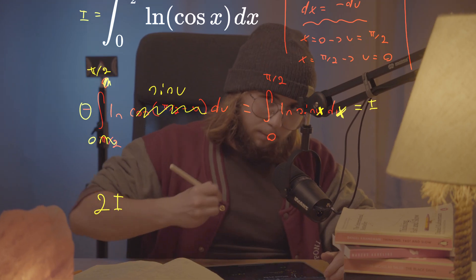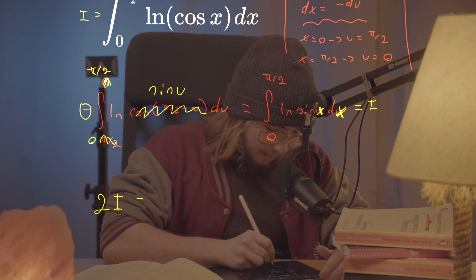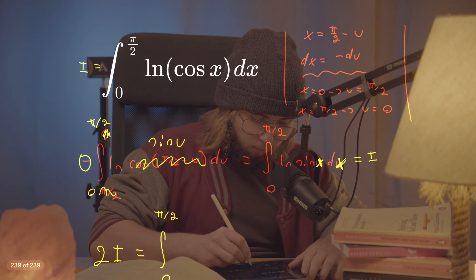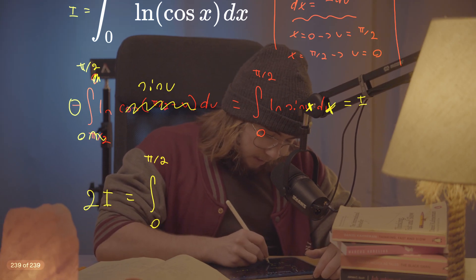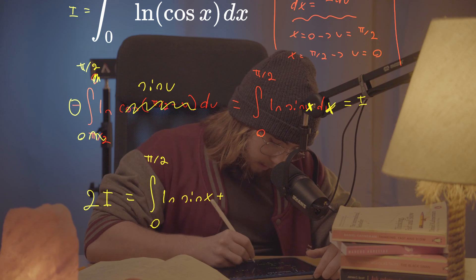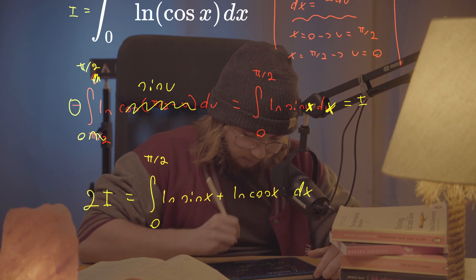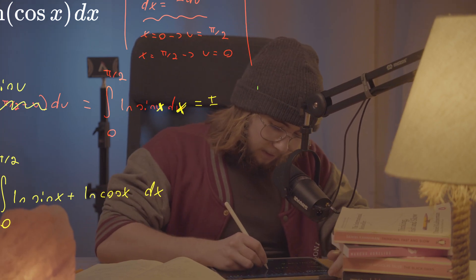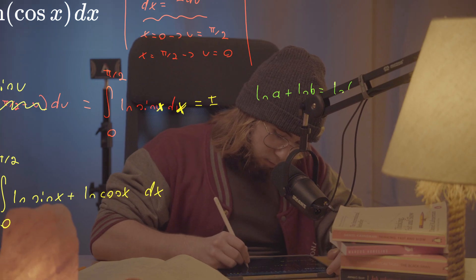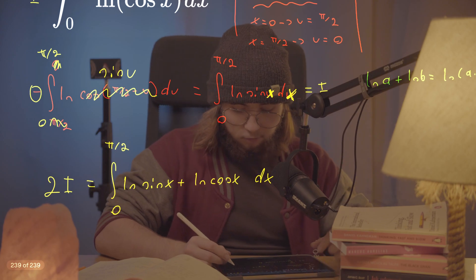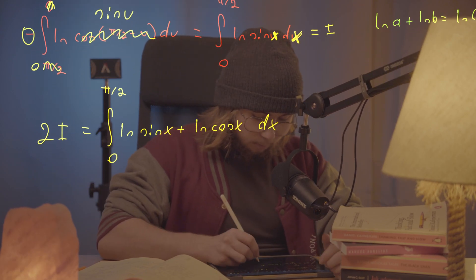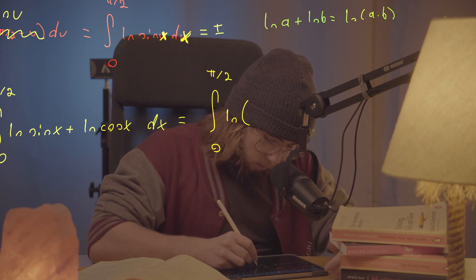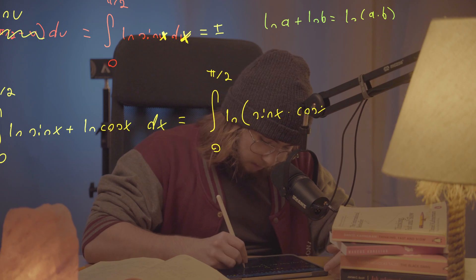So I will add those two integrals. I will get double times I equal to the integral from 0 to π/2 of the natural log of sine of x plus the natural log of cosine of x, all with respect to x. Now there is the property of logarithms that the natural log of a plus the natural log of b is the same as the natural log of the product a times b. And I can use it to combine those two natural logs.